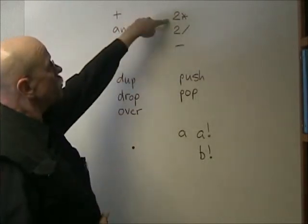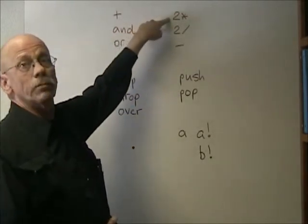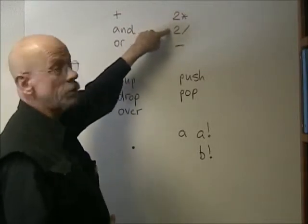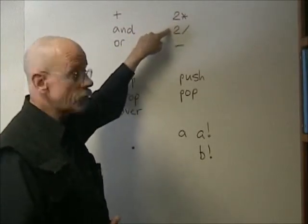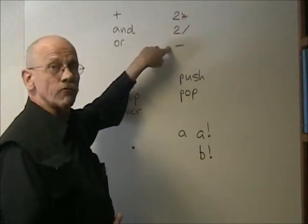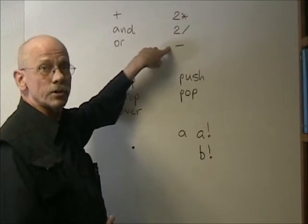Unary operators are a multiply by 2, which is a logical left shift. A divide by 2, which is an arithmetic right shift. And a unary bitwise inversion one's complement.